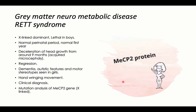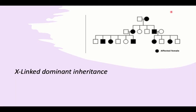One famous neurometabolic disease is Rett syndrome — a gray matter neurometabolic disease that is genetic, associated with the MECP2 gene mutation. It also has an X-linked dominant pattern of inheritance, where one X chromosome with one mutant gene is sufficient to express the disease, and it is lethal for males. So it usually presents in girls.